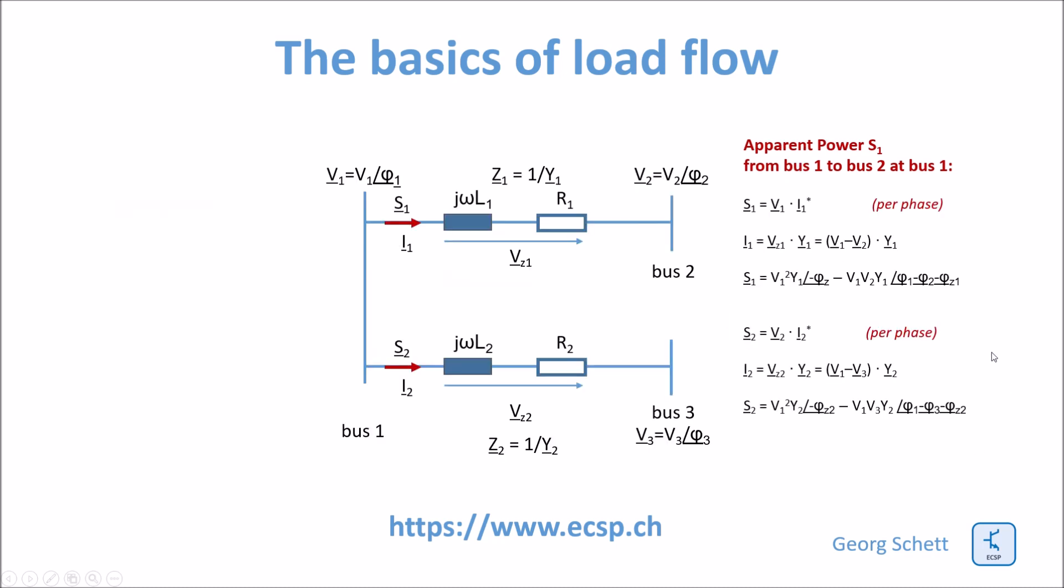So for all the other buses, again per phase, the apparent power is then this formula here, the same formula. The only difference is that you have another bus here. You see another bus and another admittance with their own phase angles. You can now continue to add other buses to the model as well. The approach is always exactly the same.